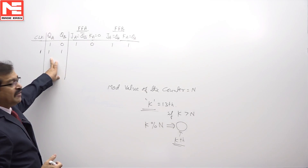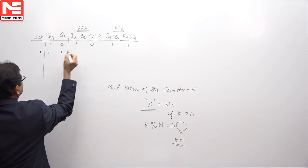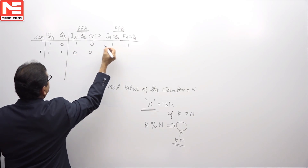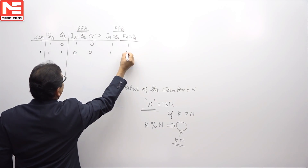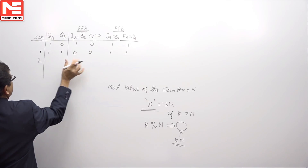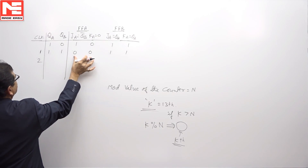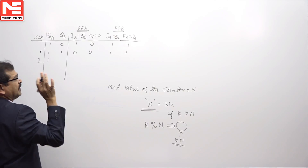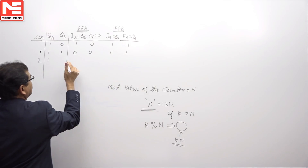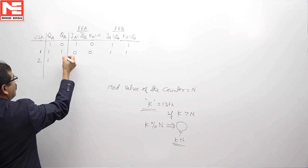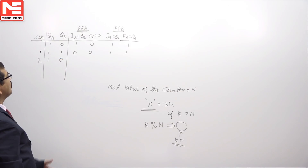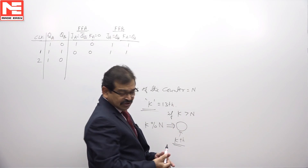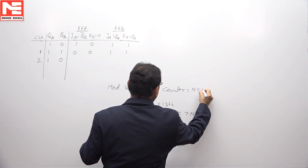After the first clock pulse, the content of the counter is 1,1. Before the second clock pulse, QB is 1 so QB bar is 0, and QA is 1. After the second clock pulse, flip-flop A has inputs 0,0 so it stays at 1 (same as previous state), and flip-flop B has inputs 1,1 so it toggles to 0. The circuit is back to the initial state after 2 clock pulses, so the mod value of the counter is 2.